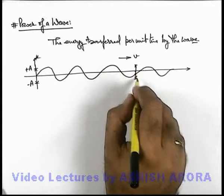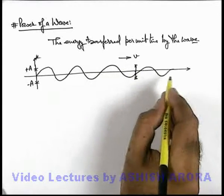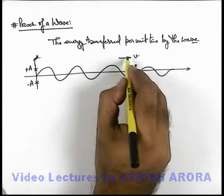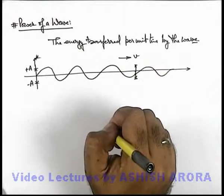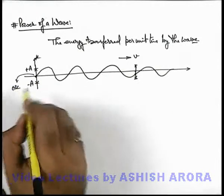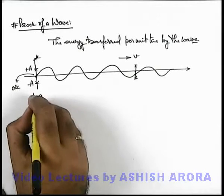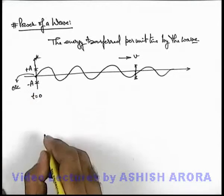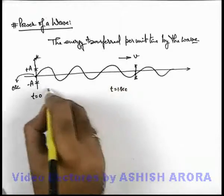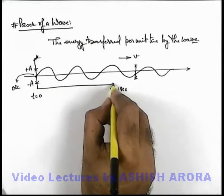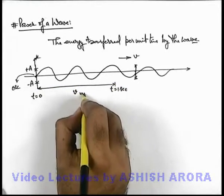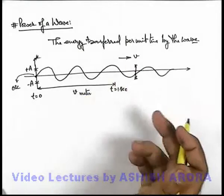The medium particles are not displaced, but energy flows through each medium particle. Now, if the wave is propagating at a speed v, and the oscillator placed at the origin is started at t equal to zero, then up to t equal to 1 second, the wave will travel up to a distance of v meters, as its speed is v.